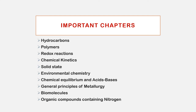Hydrocarbons is an important chapter covering alkanes, alkenes, and alkynes, as well as aromatic compounds — especially aromaticity and anti-aromatic compounds. Polymers is also covered: types of polymerization, monomers, catalyst use — including Ziegler-Natta catalyst — and related reactions.